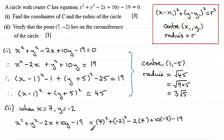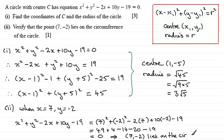So what we've got here is 49 plus 4 minus 14 minus 20 minus 19. And if you work that out, you do get 0. So it follows from this that 7 minus 2 lies on the circumference. And I just feel it's good just to summarise this point at the end. So we'll just put that in there, lies on the circumference. And there we go.